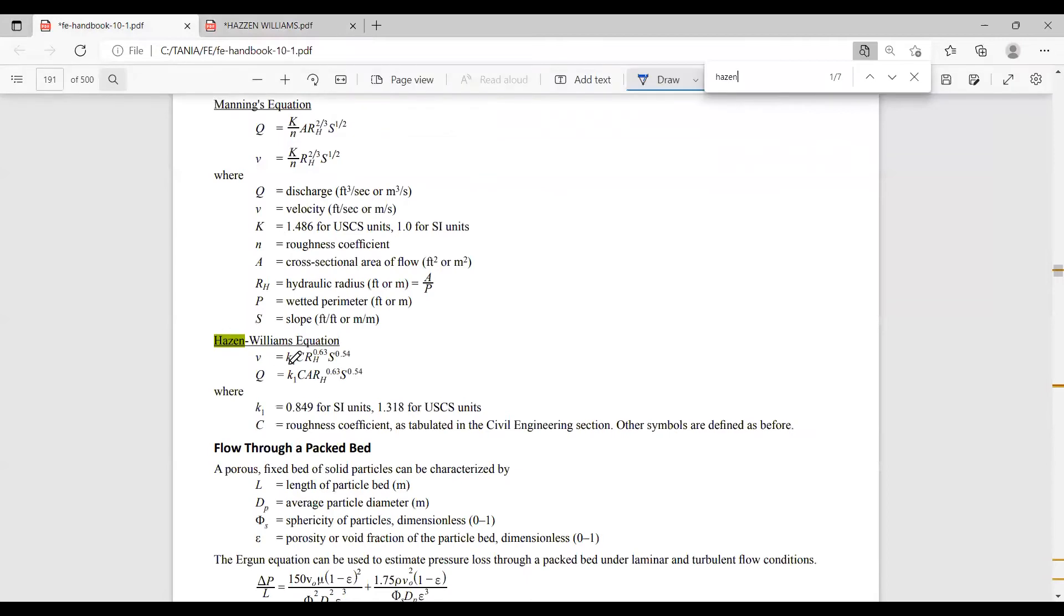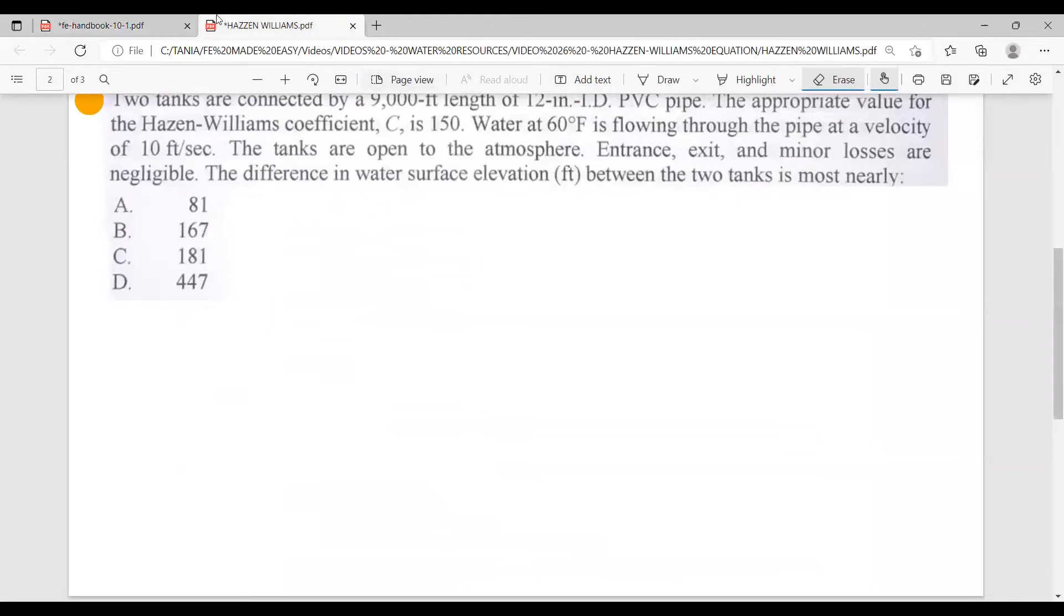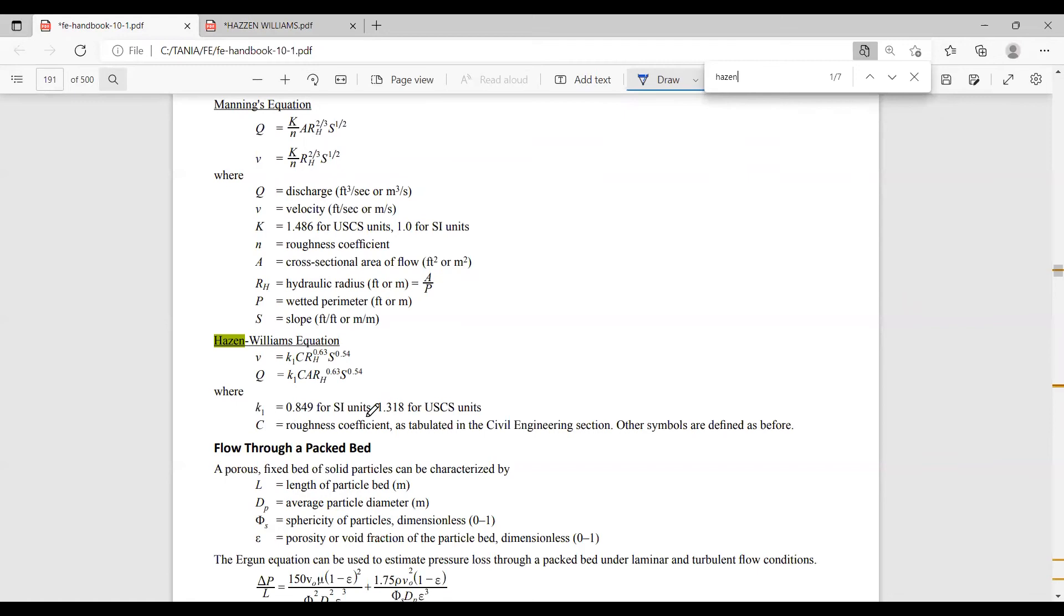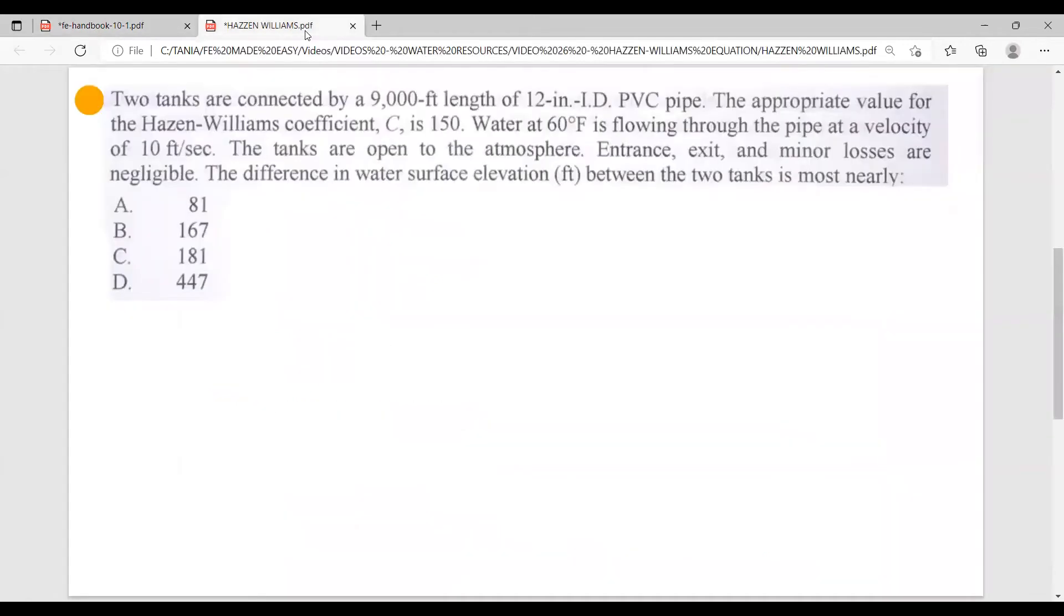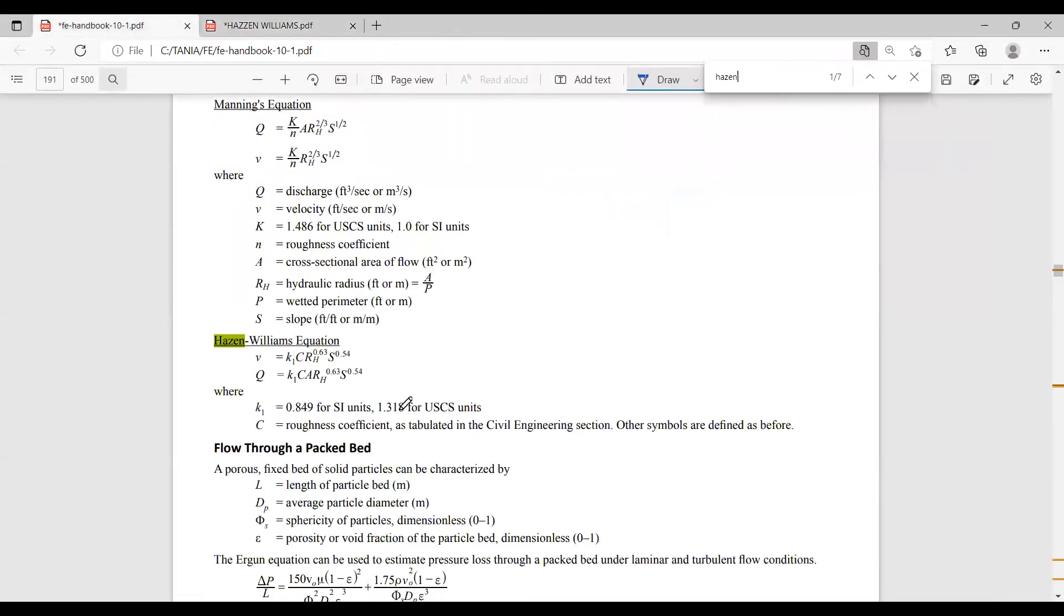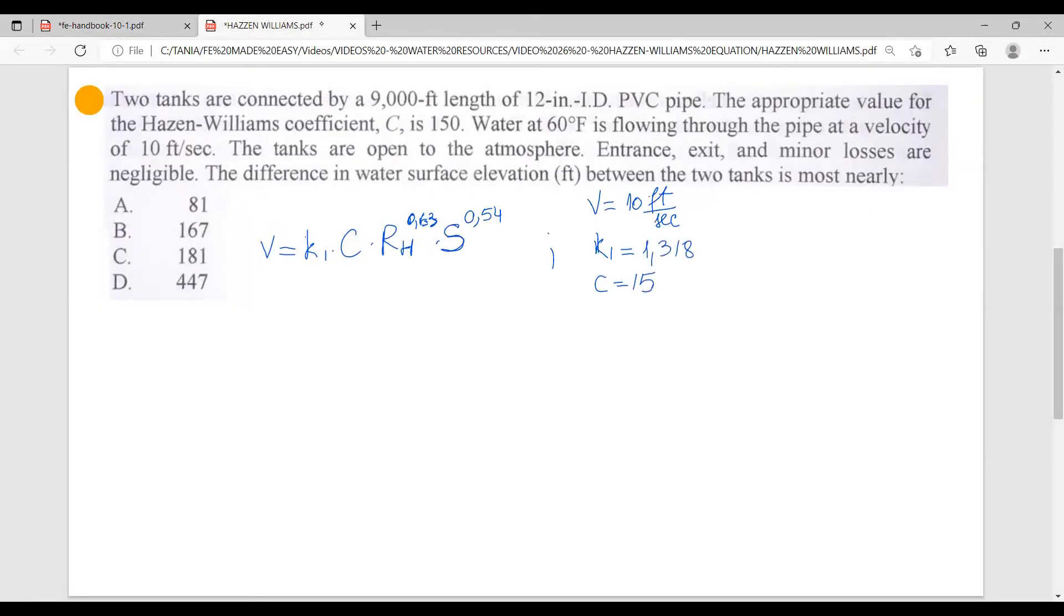Okay, so the velocity is K1 coefficient of roughness times hydraulic radius at 0.63 and the slope at 0.54. Now K1 is a constant and is given as 0.849 for SI units and 1.318 for USCS units. We are working here with feet so we have US units. So our K1 is going to be 1.318. Let's go and write the formula down. I will point out what we know.